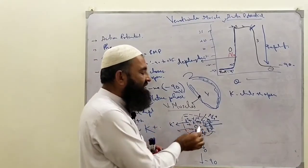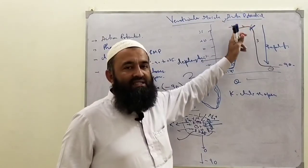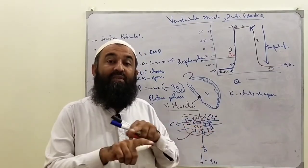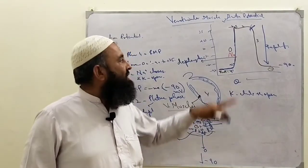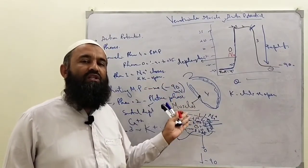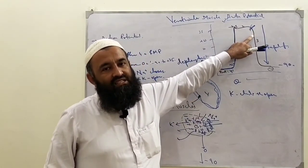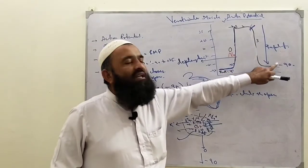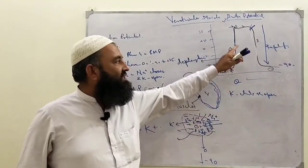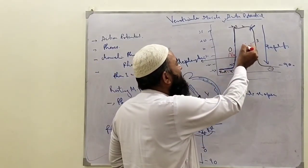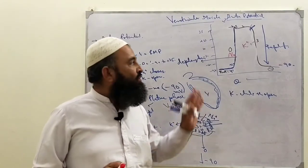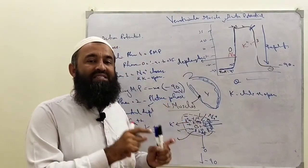The calcium channel opens during the plateau phase; calcium enters while potassium exits, so the membrane polarity remains sustained at the same level — this is the plateau phase. When the calcium channel closes, potassium continues to move outside, positive charges decline, and negativity increases until the cell returns to rest. This repolarization is Phase 3, which is due to the potassium channel moving potassium to the outside. These phases together describe the ventricular muscle action potential.